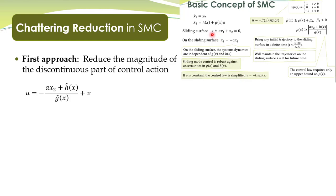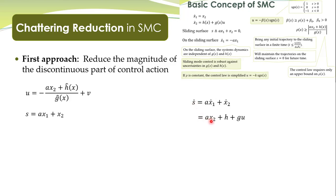We had defined the dynamics of the sliding surface. We had taken S-dot and by selecting a quadratic Lyapunov function we demonstrated that this control law ensures the asymptotic stability of S-dot — that is, it brings all trajectories to the sliding surface S equal to zero. Here is the sliding surface and we take the derivative of S: S-dot equals A*x1-dot plus x2-dot. Substituting x1-dot and x2-dot from the system equations, we get this expression for S-dot, omitting the arguments of h and g for simplicity.